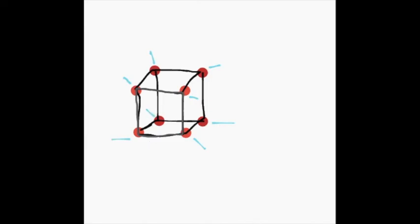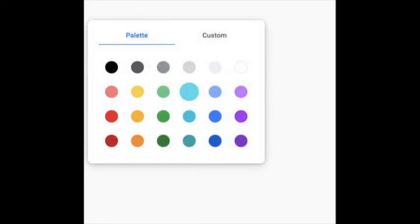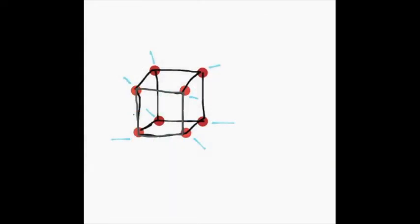Perfect, we did it! We have eight corners, and I'll use green to count the edges: one, two, three, four, five, six, seven, eight, nine, ten, eleven. Hmm, where are we missing it? Let's see: one, two, three, four, five, six, seven, eight, nine, ten, eleven.